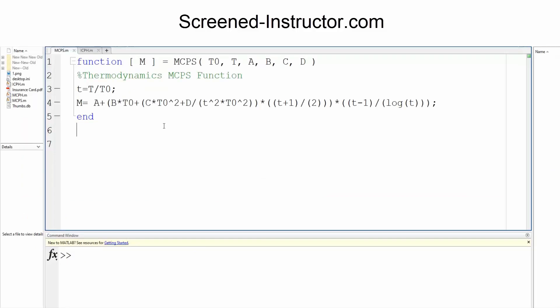In order to create this function in MATLAB, you first write 'function' space, you can write 'm' or whatever equals MCPS - that is the function name. For MCPS there is a T initial, T final, and A, B, C, and D values which you get from tables.